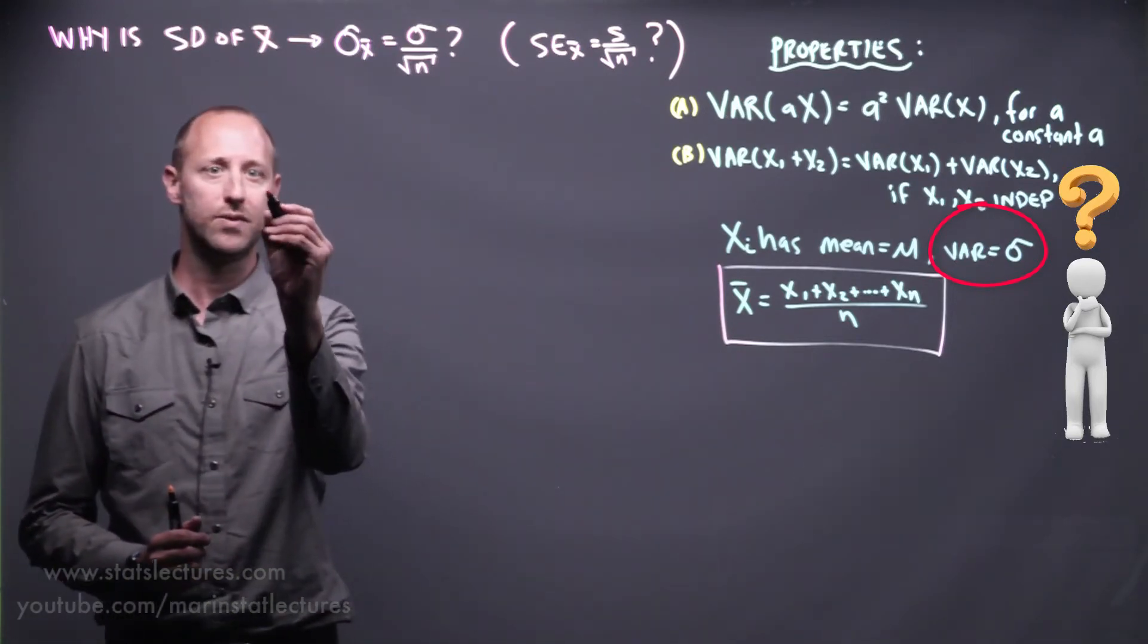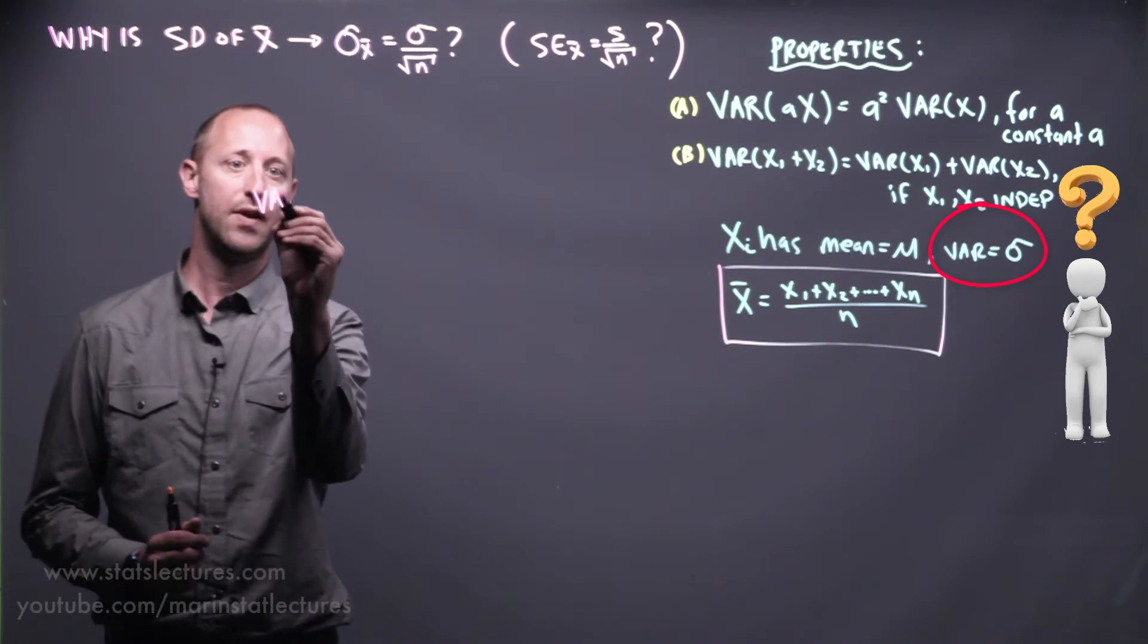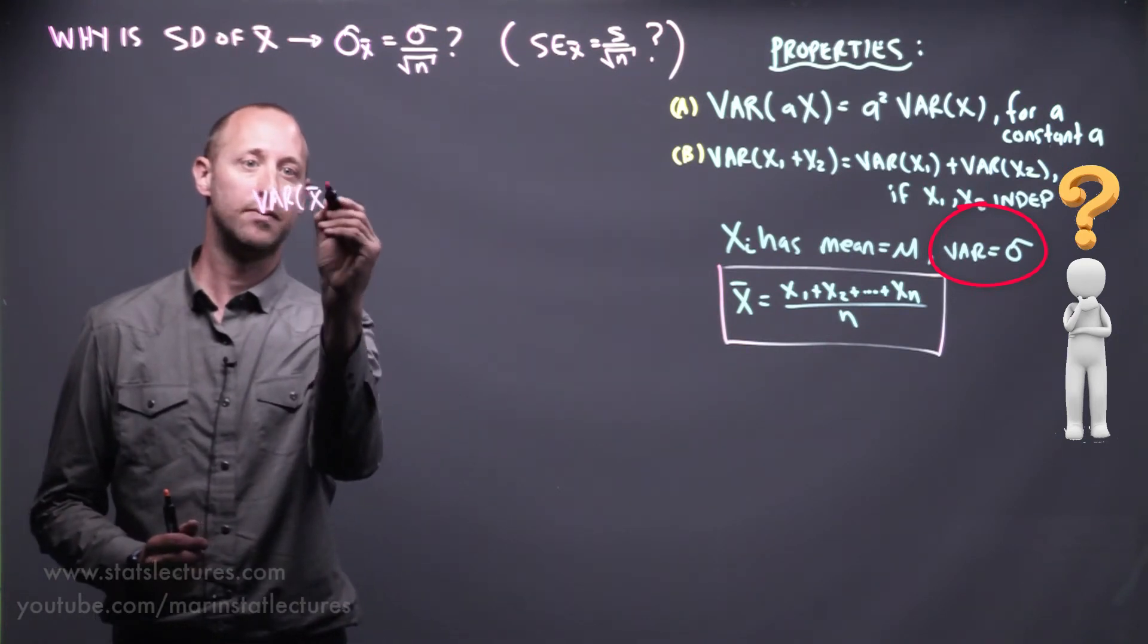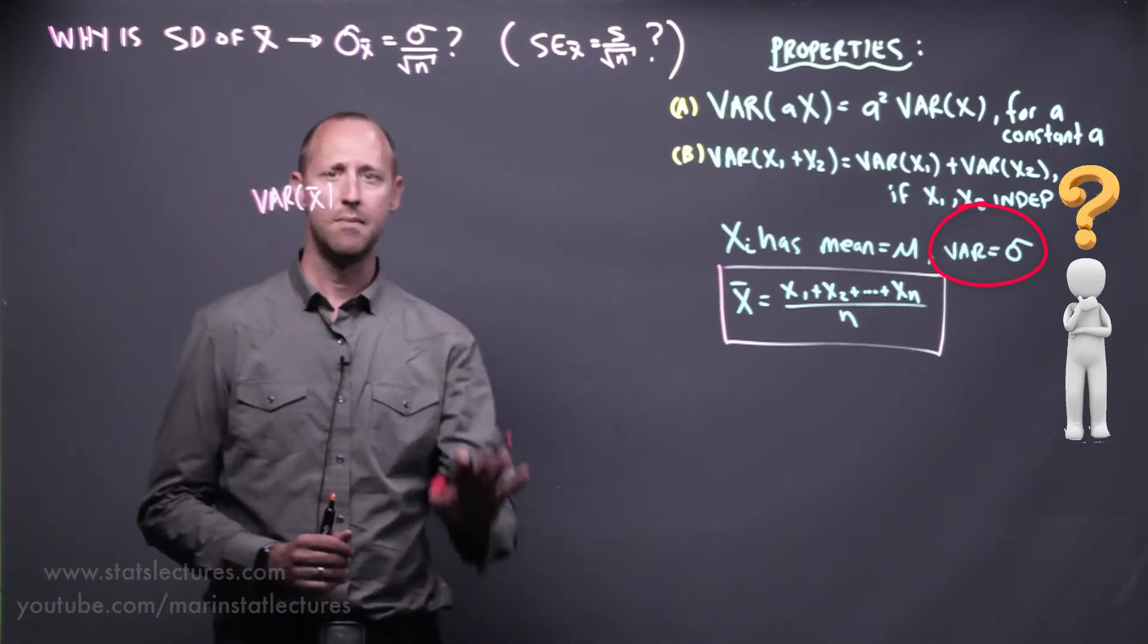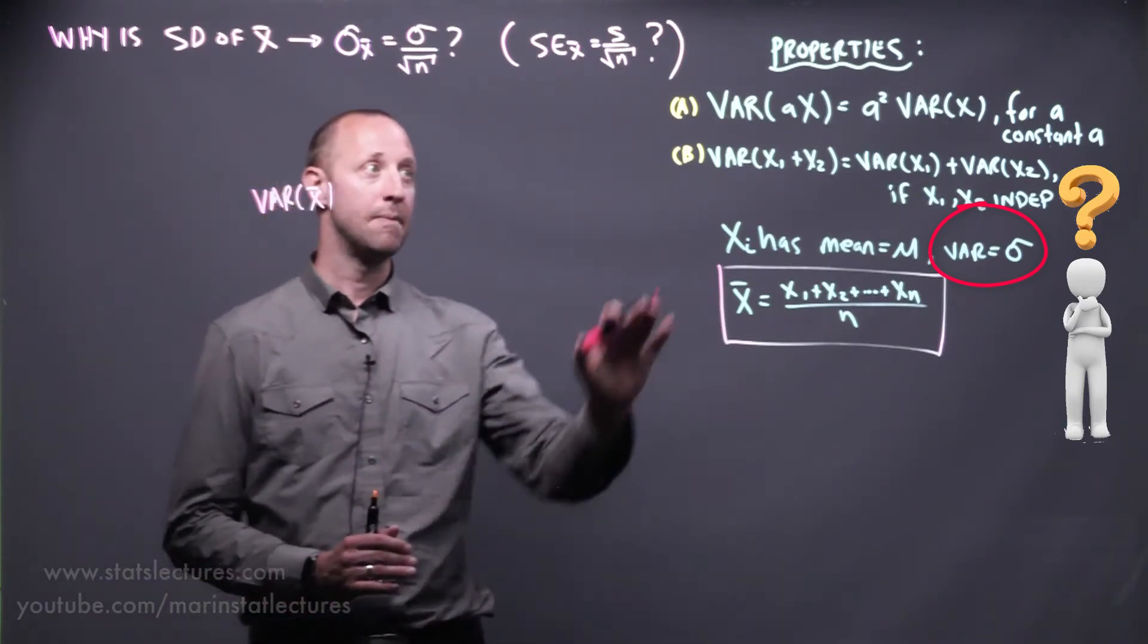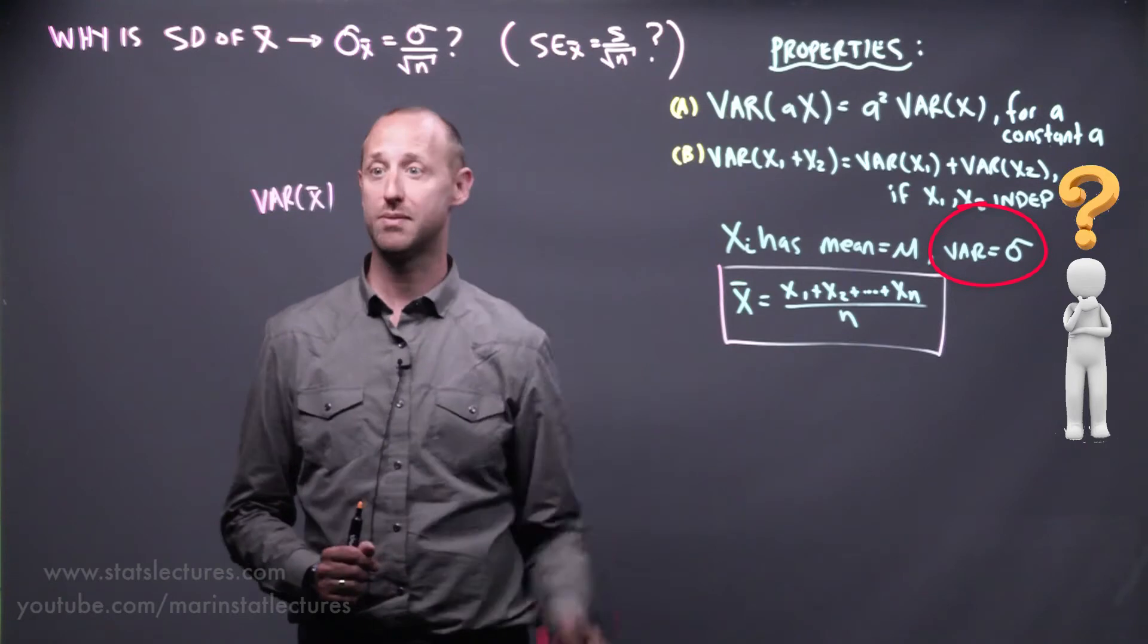So first let's start with the variance of x bar. We're going to get to the standard deviation of the sample mean, but we're going to start by working with the variance because all these properties are expressed in terms of variance.